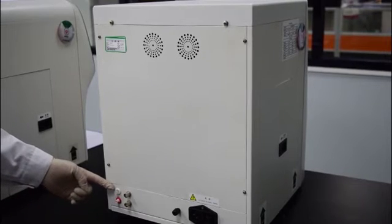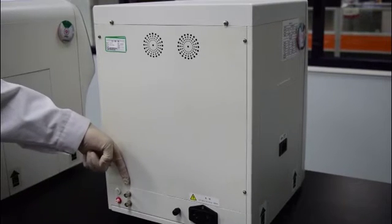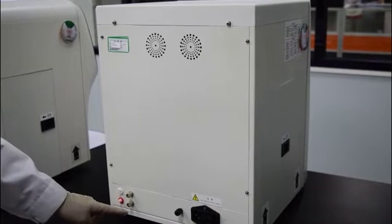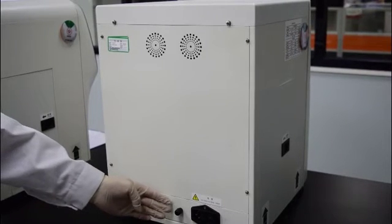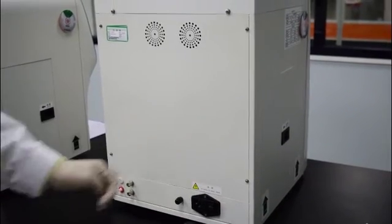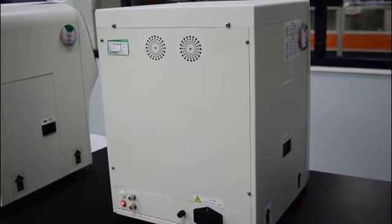On the rear panel, there are the diluent tube connector, diluent sensor cable connector, waste tube connector, waste sensor cable connector, ground line connector, power cable connector, and power switch. Up there are two fan vents.